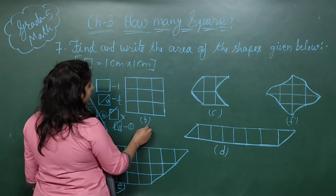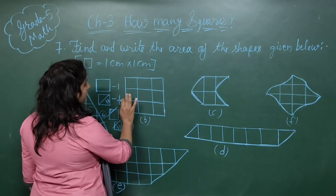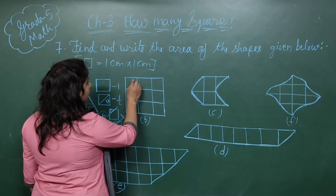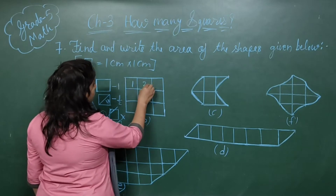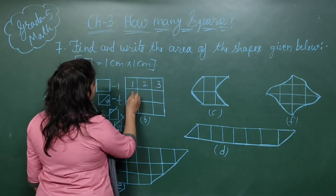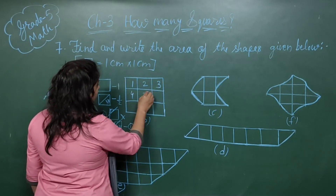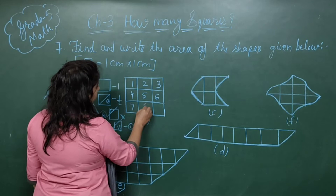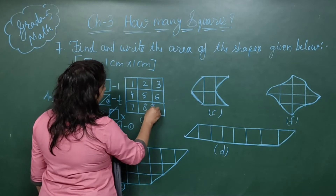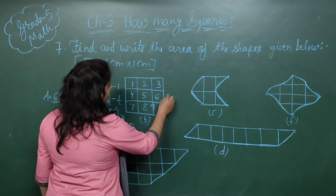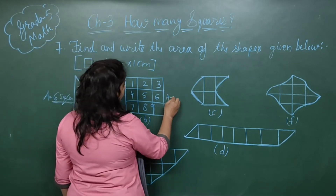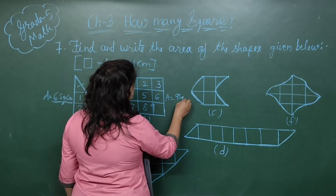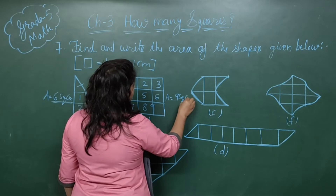In picture number B, we count the completed whole squares: 1, 2, 3, 4, 5, 6, 7, 8, 9. The area of this shape is 9 square centimeters.